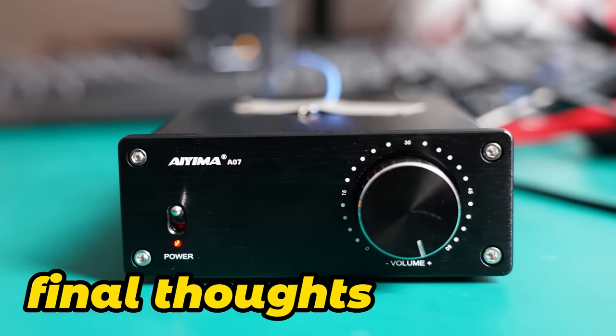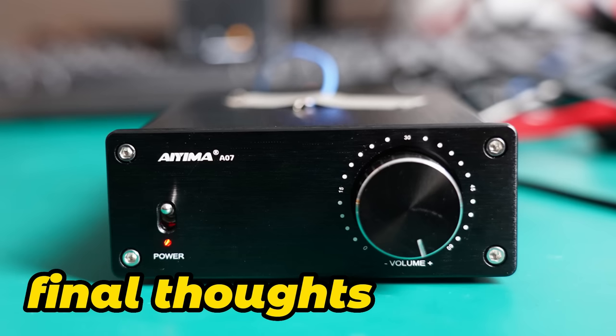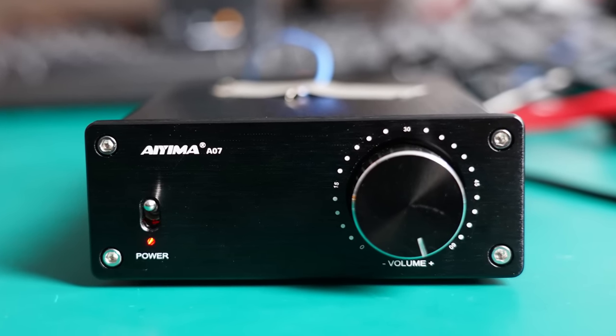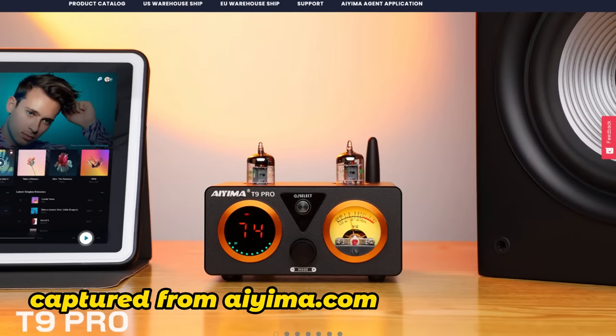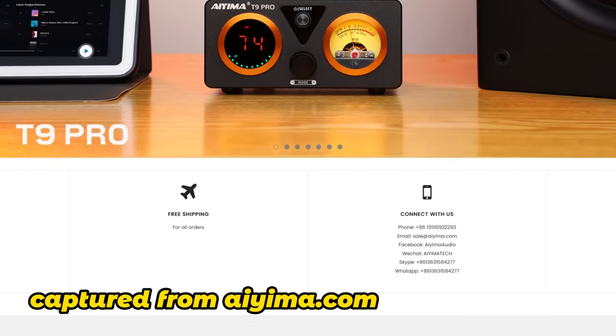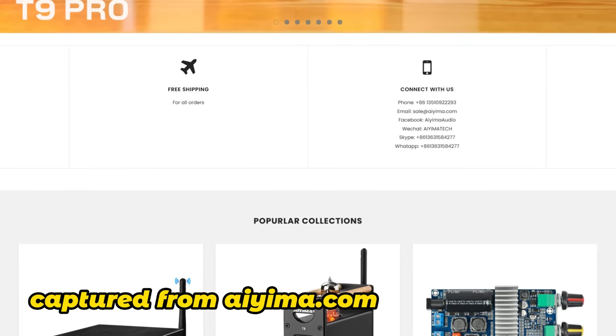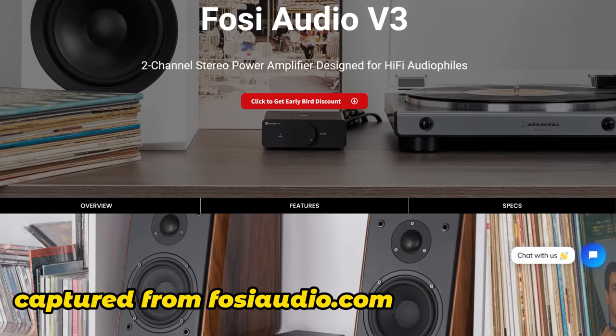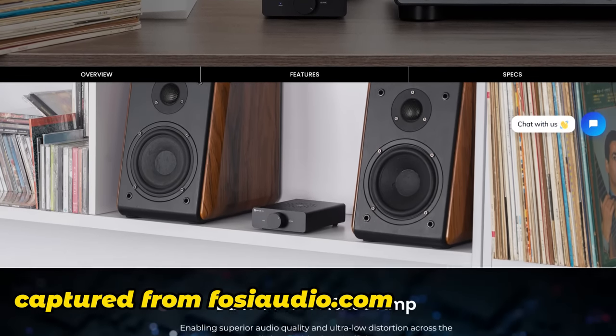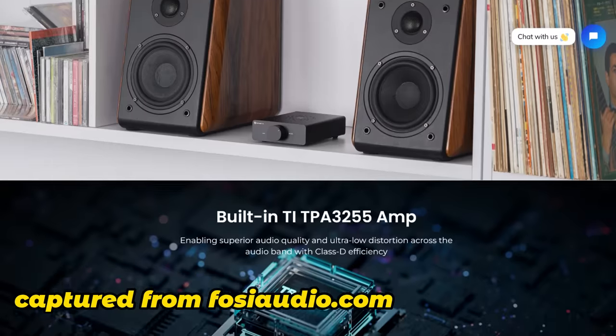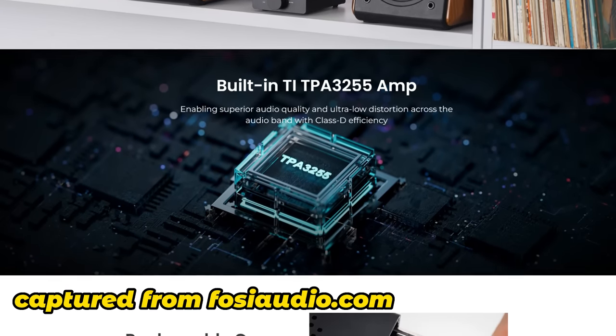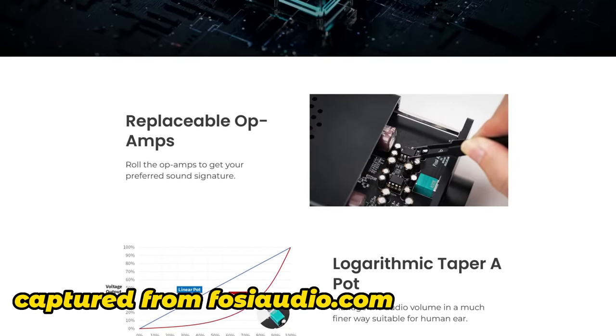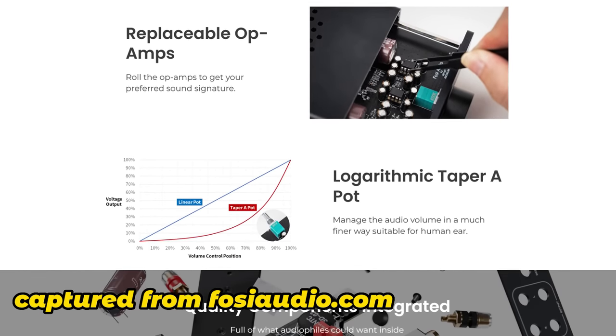The IEMA A07 is a very classic mini-class D amplifier. It has a good reputation and still has quite a few users to this day. Unfortunately, IEMA hasn't launched any classic products like the A07 since, and instead has been reducing the quality of components in the A07. The V3 that Fossi Audio has introduced this time is clearly a full upgrade based on the A07. It not only captures the essence of the A07, but also makes considerable improvements and upgrades. My favorite part is its innovative design with ventilation holes and full casing heat dissipation.